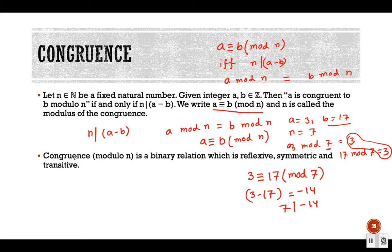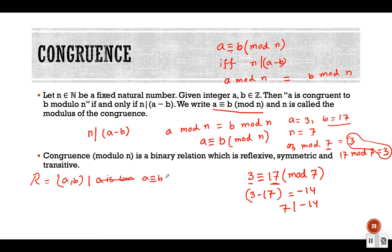Now, congruence modulo n is a binary relation. The relation is between elements like 3 and 17. We can write it as a set of ordered pairs (a, b) where each ordered pair means a is congruent to b with mod n.